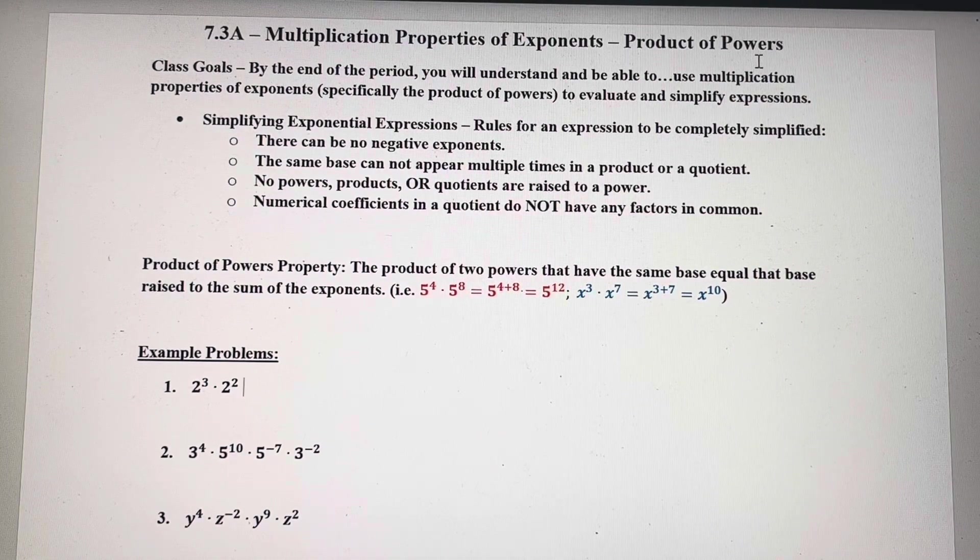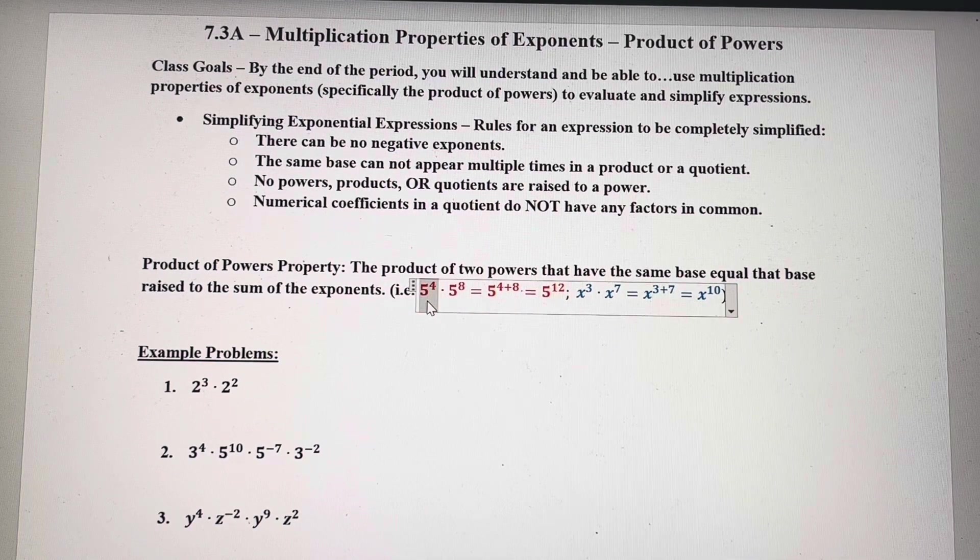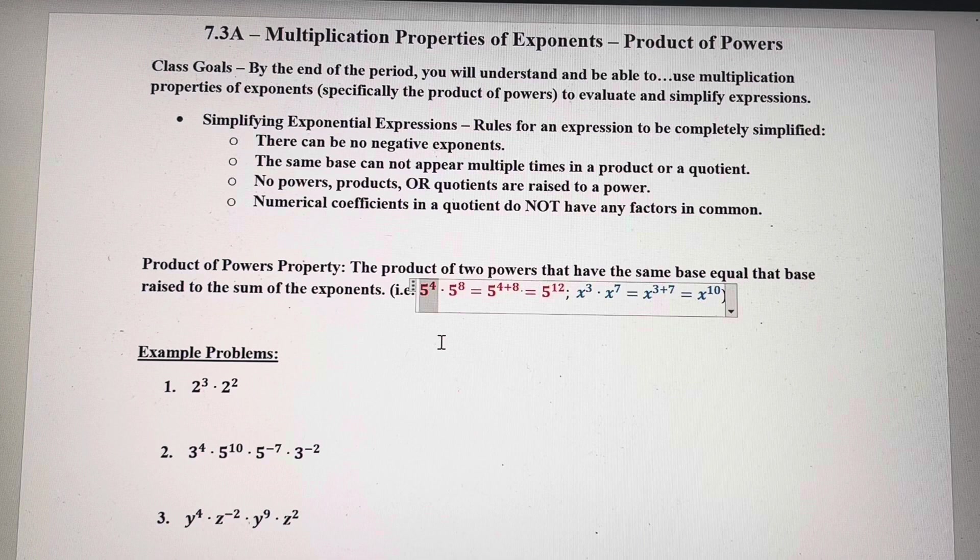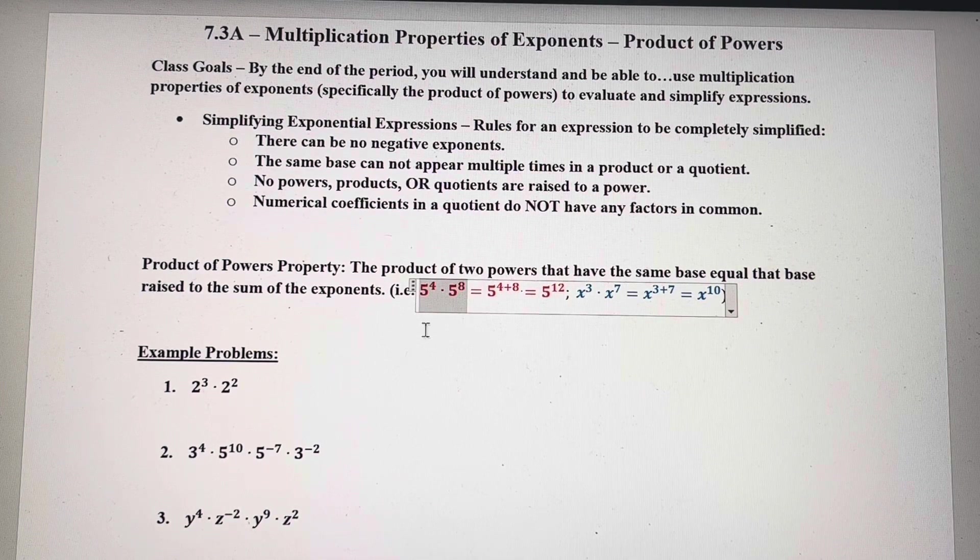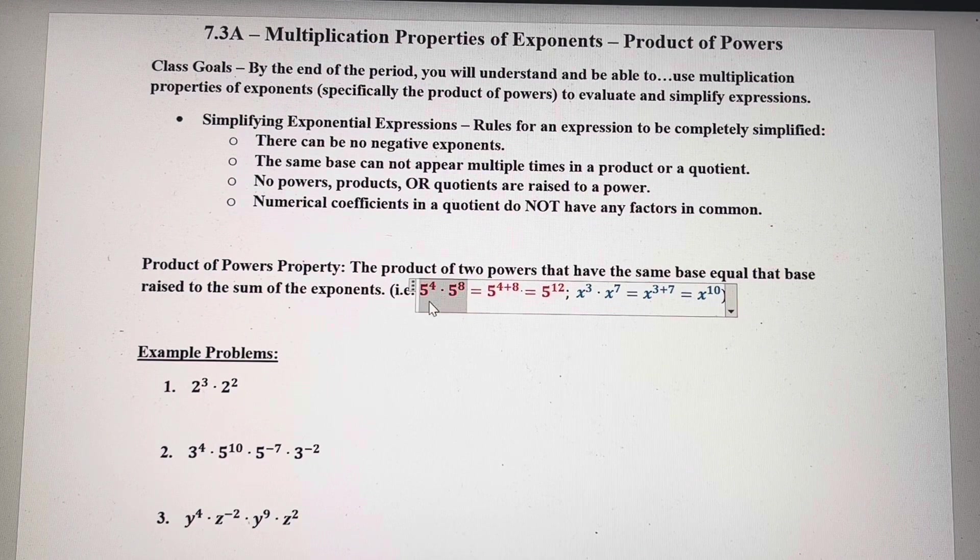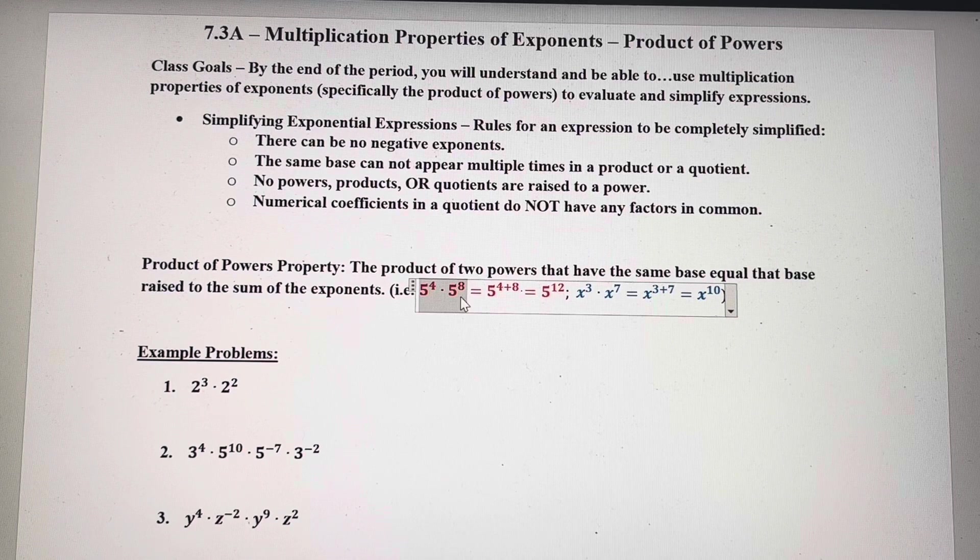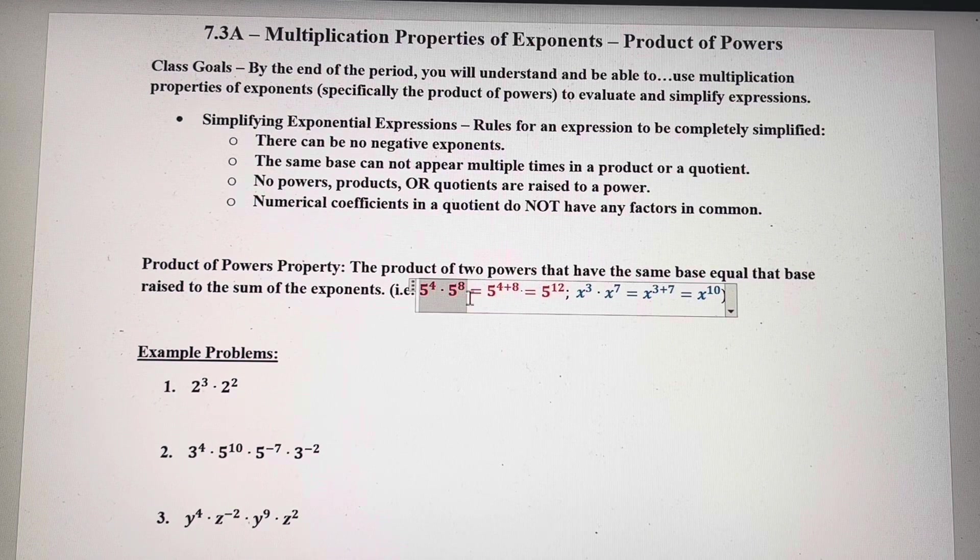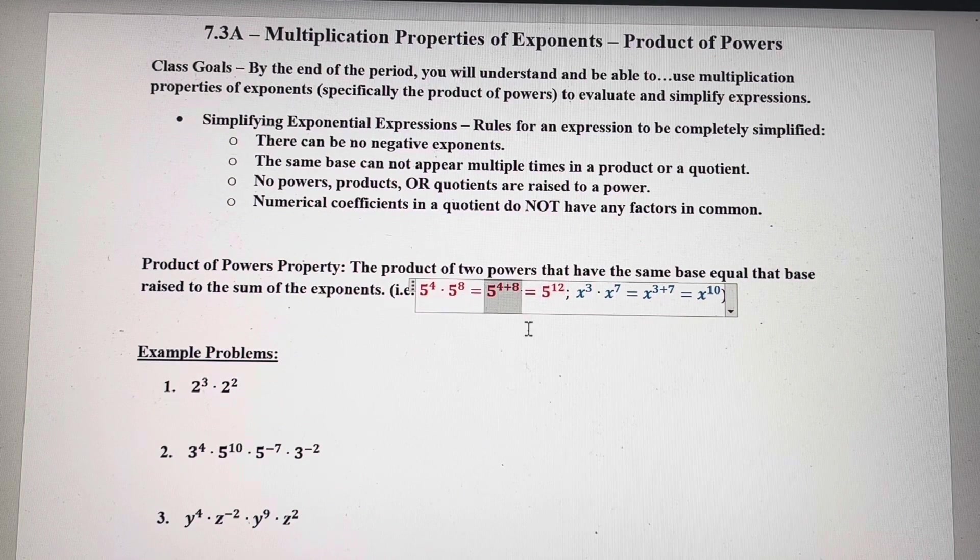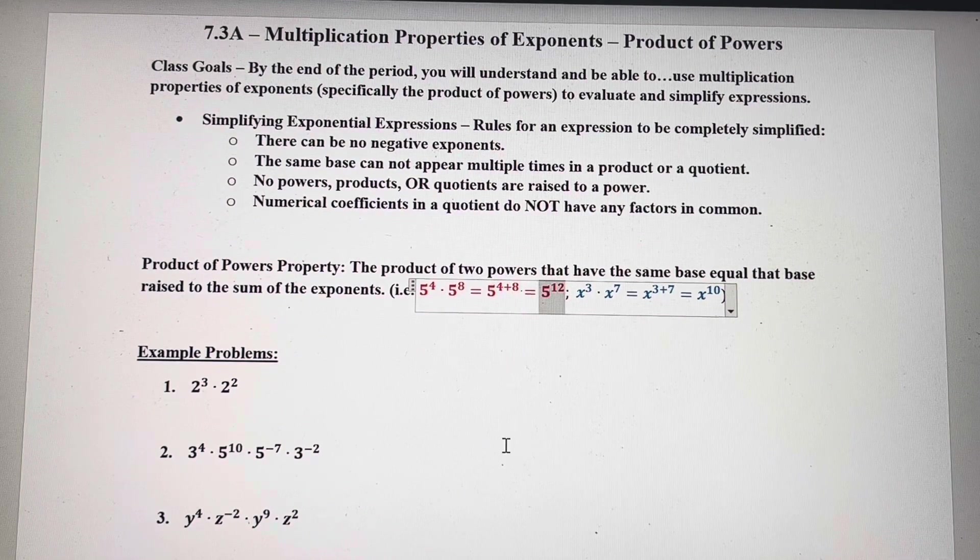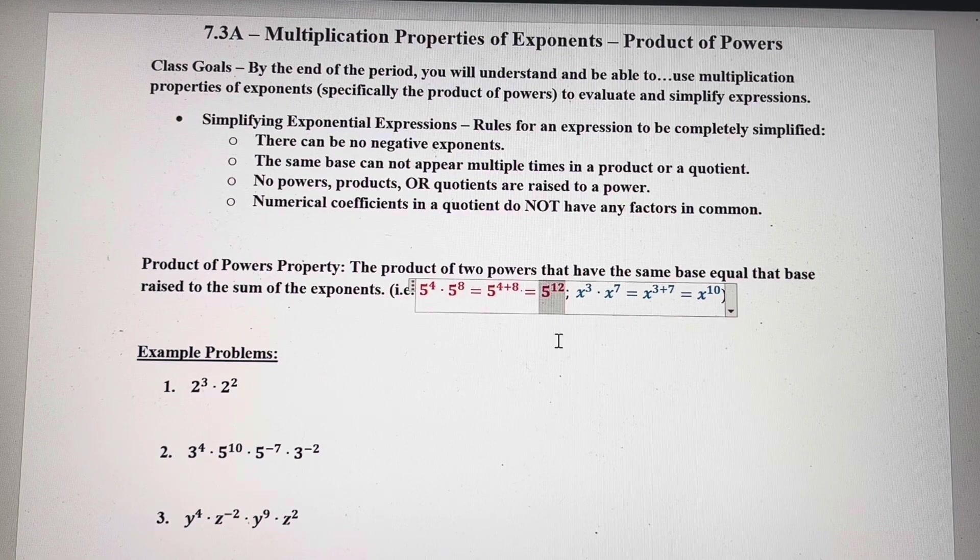So first off, we need to understand what a power is. A base with an exponent, like 5 to the 4th right here, that's what a power is considered. So in these examples, we're going to multiply two powers that have the same base in order to use this property. Because these two powers have the same base, I can add those exponents, 5 to the 4 plus 8, and that's going to give me 5 to the 12th, which I could evaluate. This would be a very large number, but that's going to be 5 to the 12th.